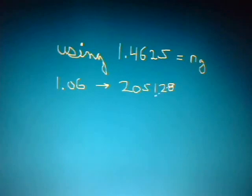So using the group index for fused silica, you've got 1.4625, and we've got our group index at 1.4625. So using that pulse at 1.06 microns, we get a velocity in the fiber as 205,128 kilometers per second.